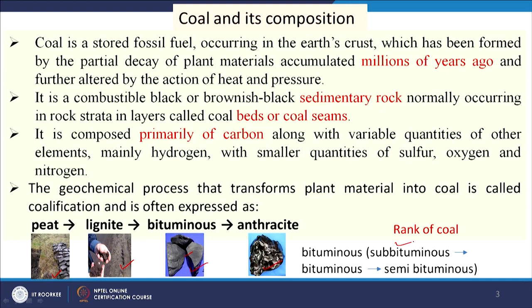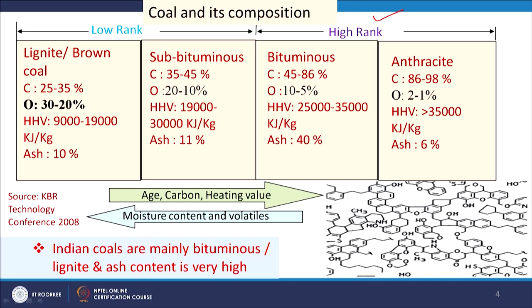If we look at compositions and properties, carbon content differs from one rank to another. Higher carbon content gives higher heating value, which is desirable for energy production. In short, we can classify coal into high-rank coal and low-rank coal. High-rank coal includes bituminous and anthracite, whereas low-rank coal includes lignite and sub-bituminous.